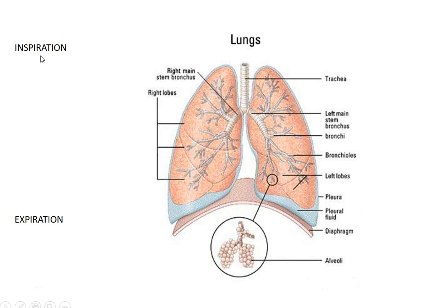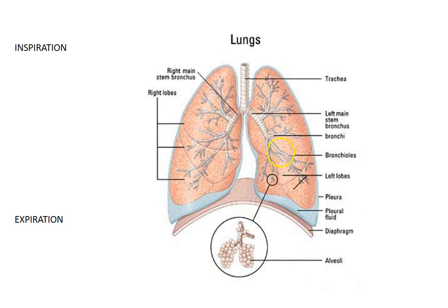Inspiration is considered an active process because it involves the diaphragm contracting. A signal from the brain is sent down to the diaphragm, and it contracts — moving down and becoming flatter. As the diaphragm moves down and flattens, the volume of the lungs goes up. When volume goes up, intrapulmonary pressure goes down, making atmospheric pressure higher than intrapulmonary pressure, so air goes into the lungs.